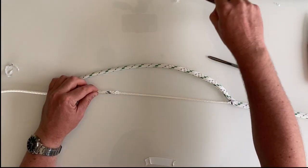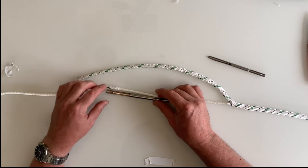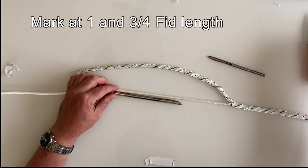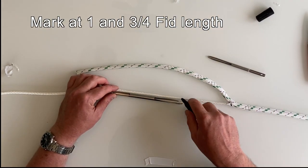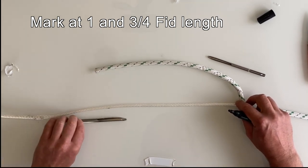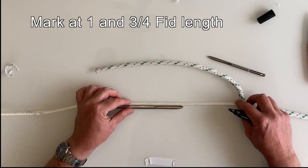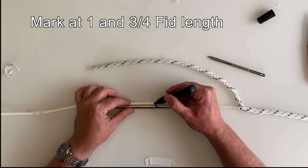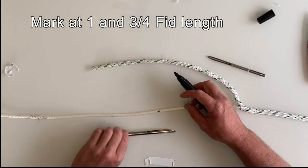I'll pull a bit more slack. Now from that mark I'm going to make another two marks. One a full fid length in towards the rope, and then the next one from that mark I'm going to put one in about three quarters the length of the fid.